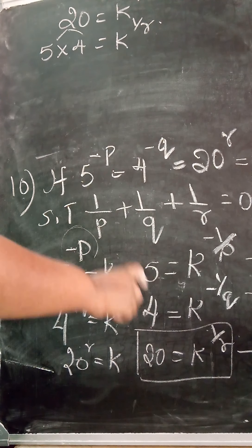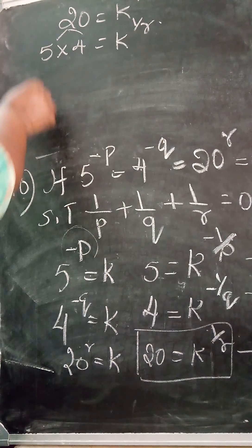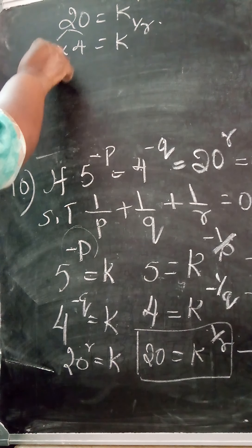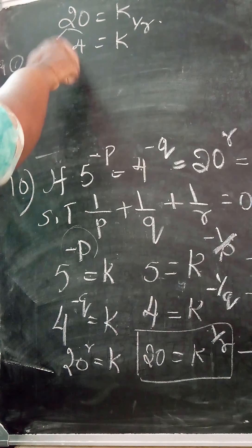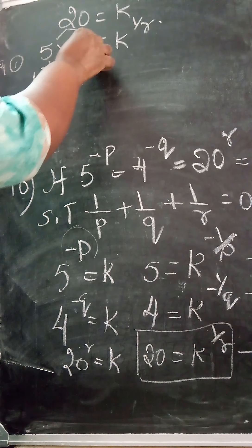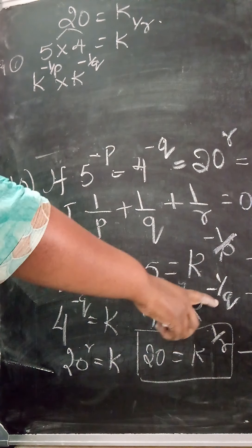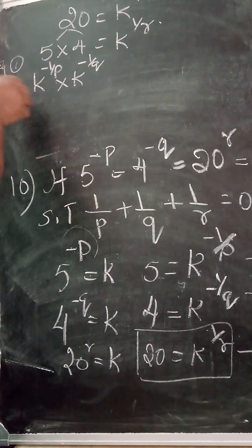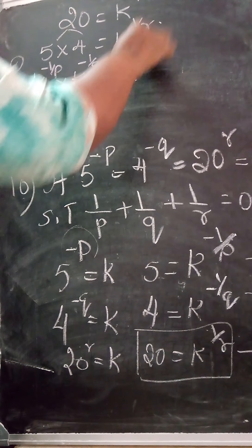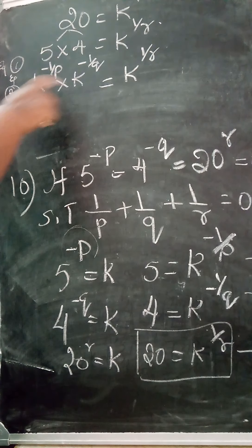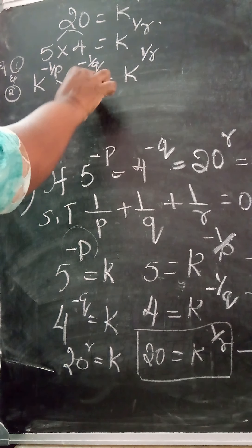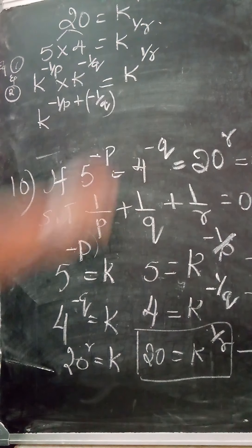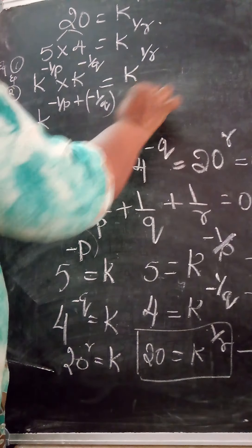So k^(-1/p) from equation 1, times k^(-1/q) from equation 2, equals k^(1/r). By the product law, we add the powers: k^(-1/p + (-1/q)) = k^(1/r). Since the bases are the same on both sides, we can equate the powers: -1/p - 1/q = 1/r.